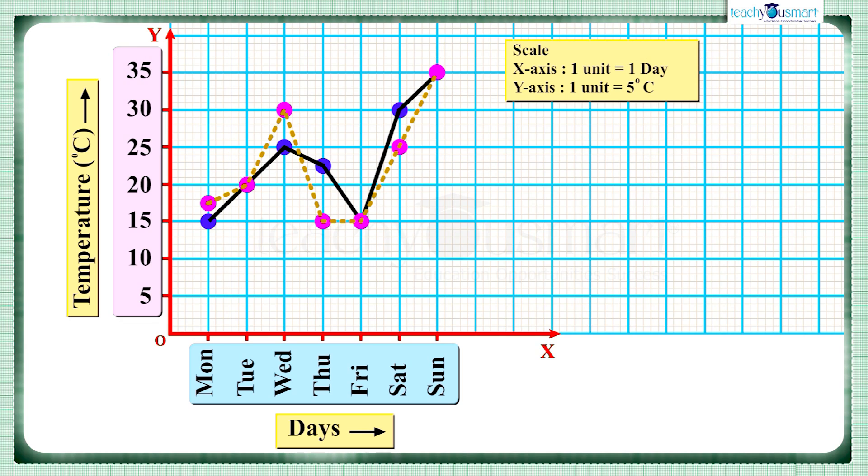Hence the solid line represents the forecast temperature and the dotted line represents the actual temperature. Here also we get line graphs. It is used for comparing two sets of data.